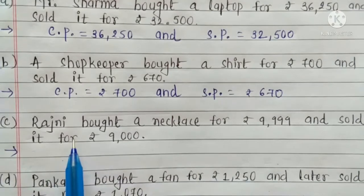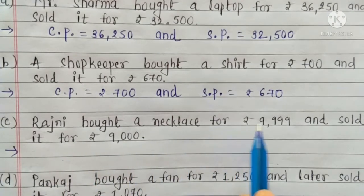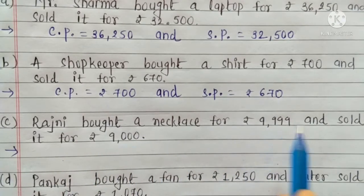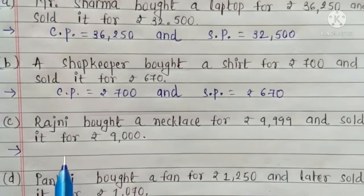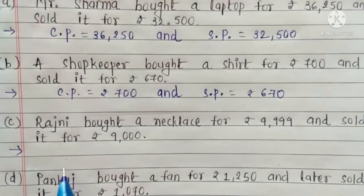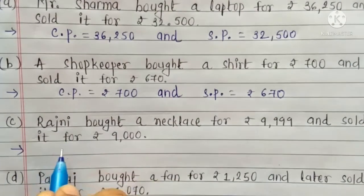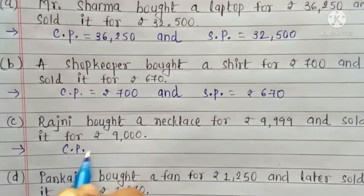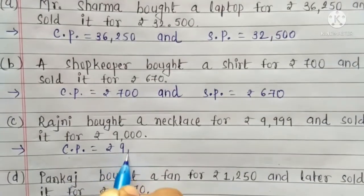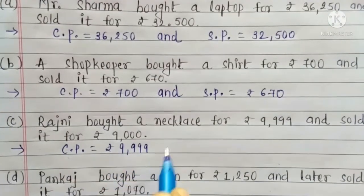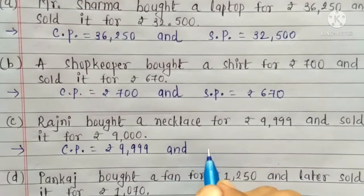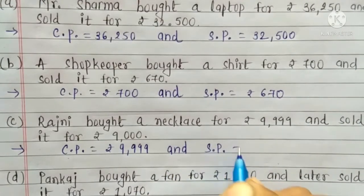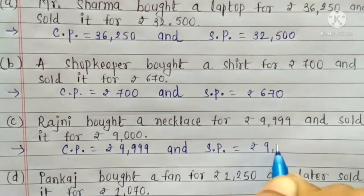C. Rajini bought a necklace for Rs. 9,999 and sold it for Rs. 9,000. That means, Rajini ने necklace 9,999 में purchase किया है. So, Cost Price है Rs. 9,999. And 9,000 में sell किया है, so Selling Price है Rs. 9,000.